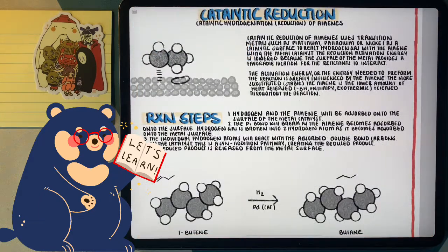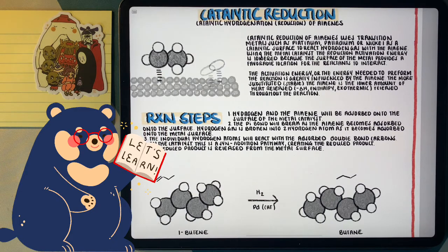Last reaction I want to look at is called the catalytic reduction of alkenes. In this case, we're going to be reducing an alkene, a double bond, to an alkane, fully saturating the molecule.